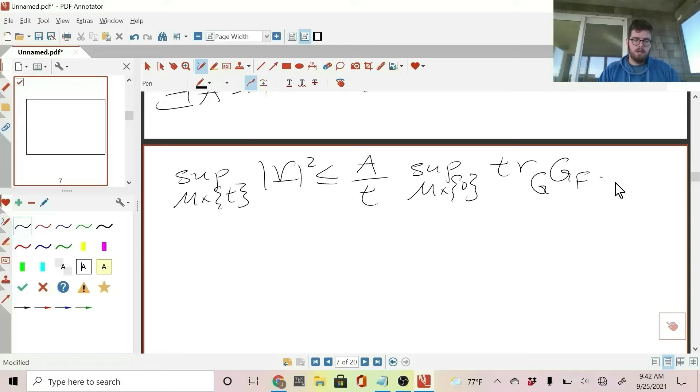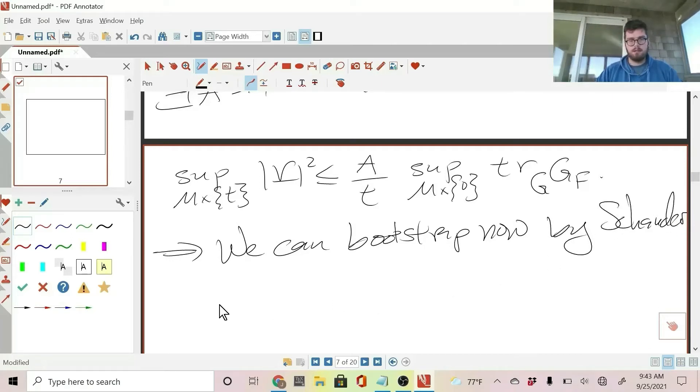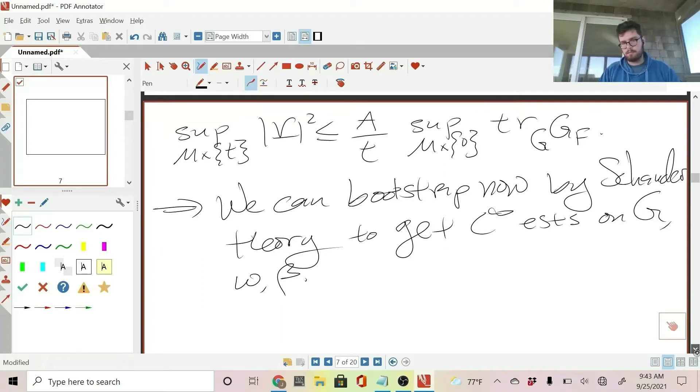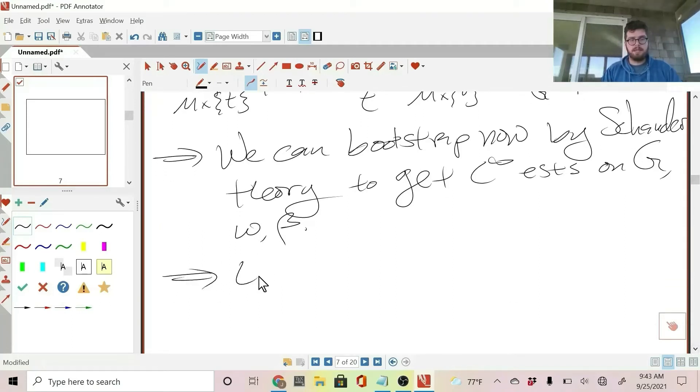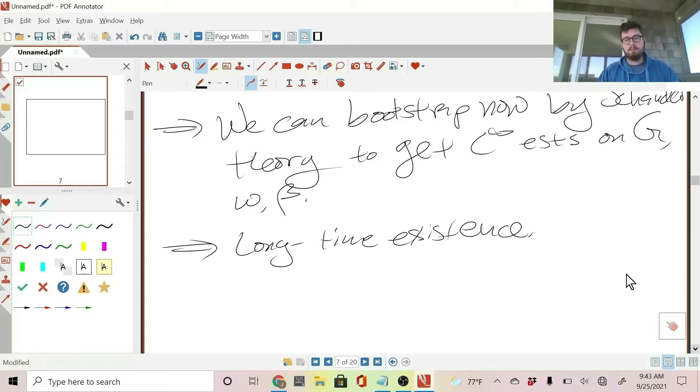So this implies that we can bootstrap. We can bootstrap now by Schauder theory to get c infinity estimates on g, which implies estimates on omega and beta. This then implies long-time existence, because if we didn't have long-time existence something would have to be breaking down. We would have to be losing c infinity. So some estimate would have to be blowing up, but these estimates are uniform, so there can't be any blowing up.